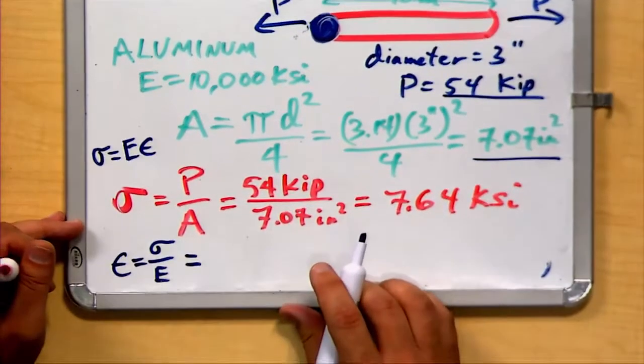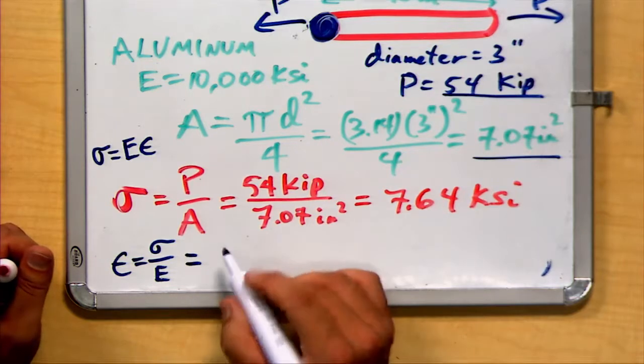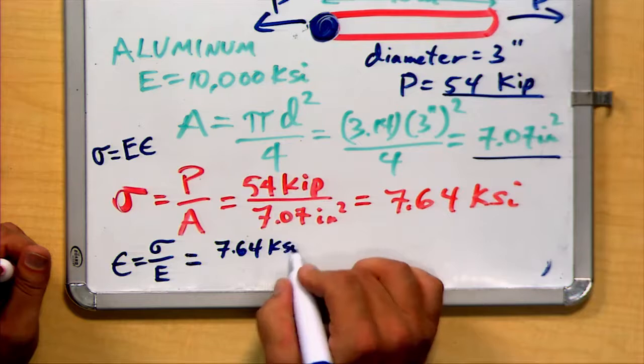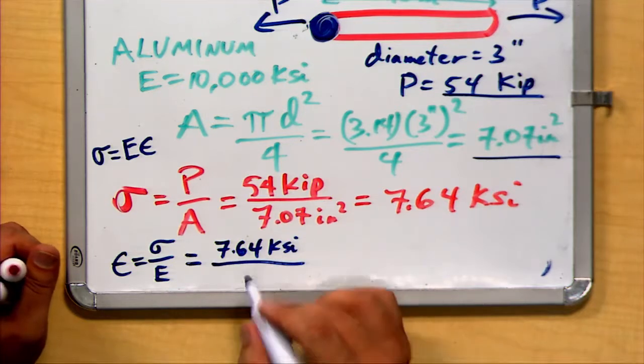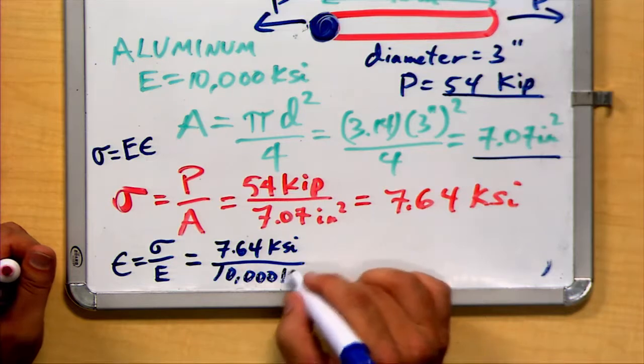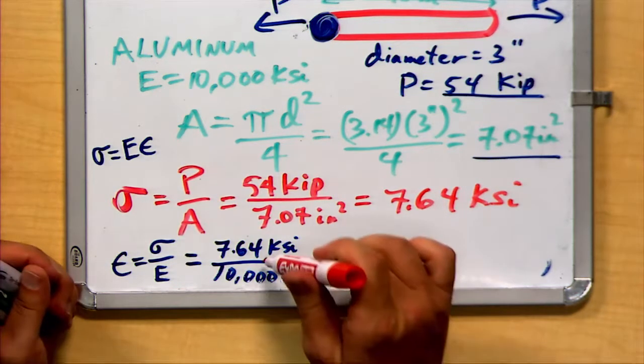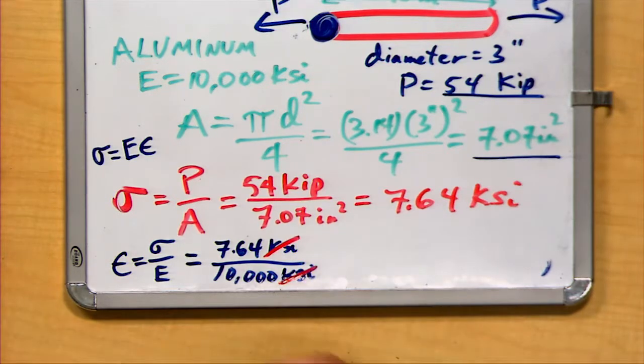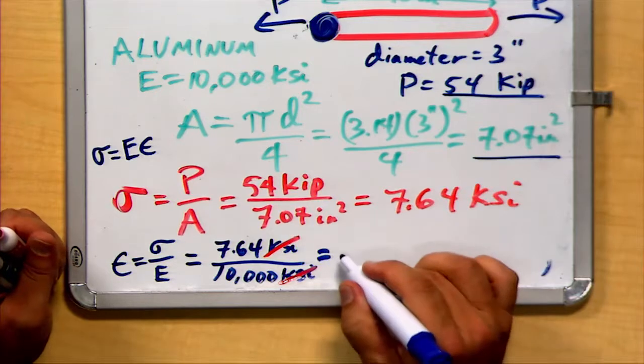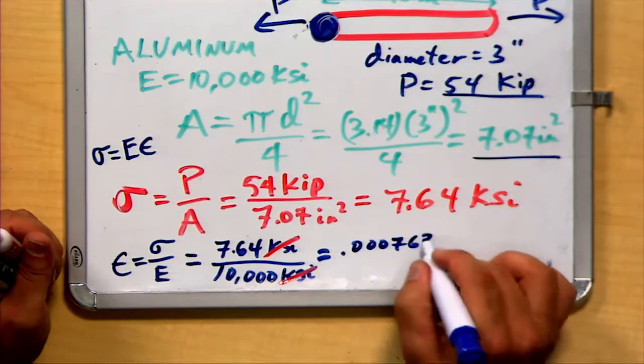In this case, that value is going to be our 7.64 KSI divided by the 10,000 KSI. Both of our kilopounds per square inch cancel, and we get a strain value of 0.000763.